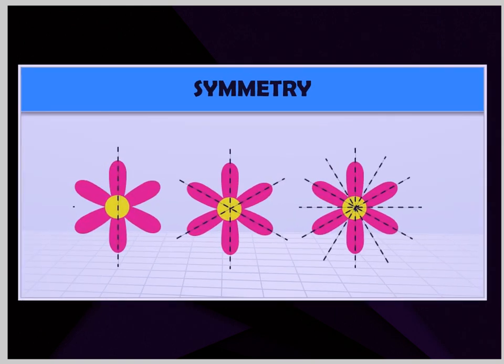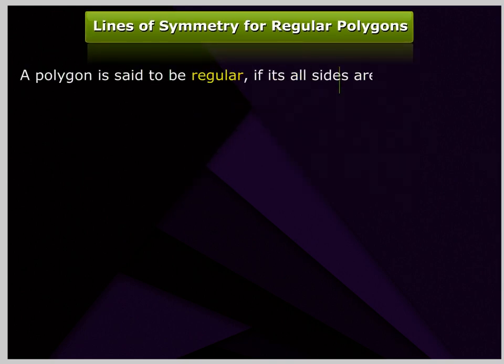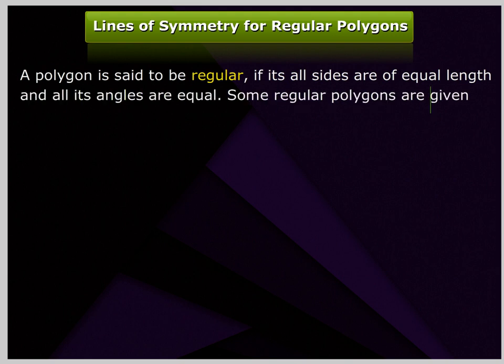Chapter 14: Symmetry. Lines of symmetry for regular polygons. A polygon is said to be regular if all its sides are of equal length and all its angles are equal.